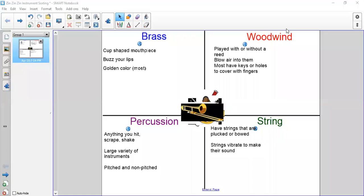We're going to talk about the four families that make up the orchestra. The first thing I'm going to ask you to do is go ahead and watch the Zin Zin Zin a Violin book. That video is up on the music playlist as well, so I want you to go and watch that first.